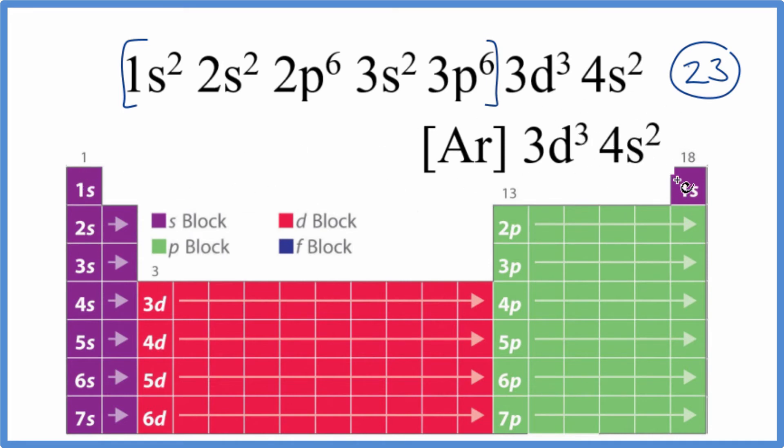So you have 1S1, 1S2, we're full with 2 with the S's. 2S2, P's hold up to 6. So we have 2P 1, 2, 3, 4, 5, 6, 3S2, 3P6. Here's 4S2, and after the 4S2, we see the 3D3.